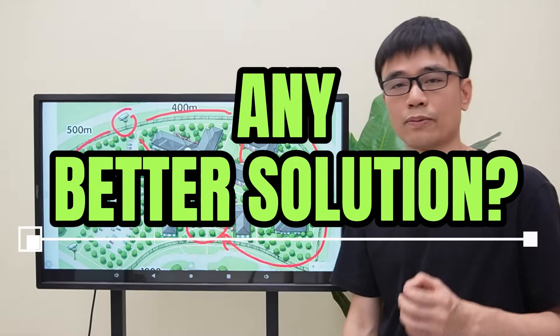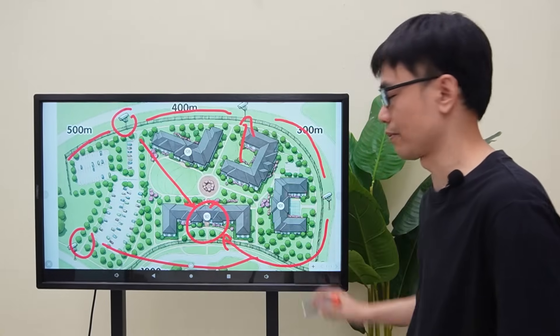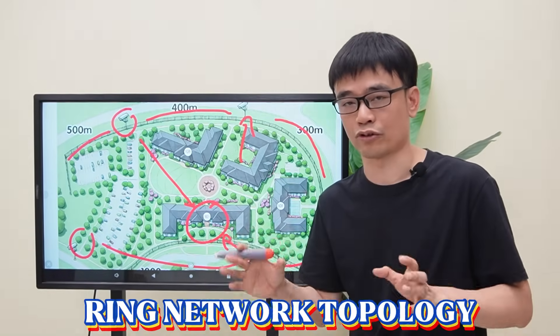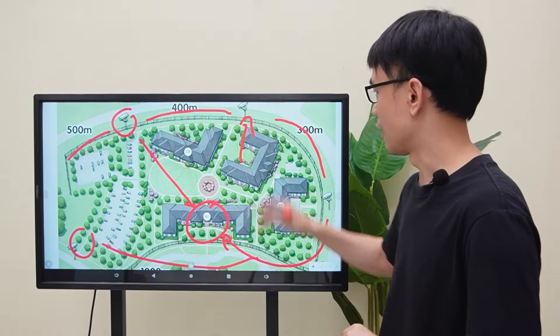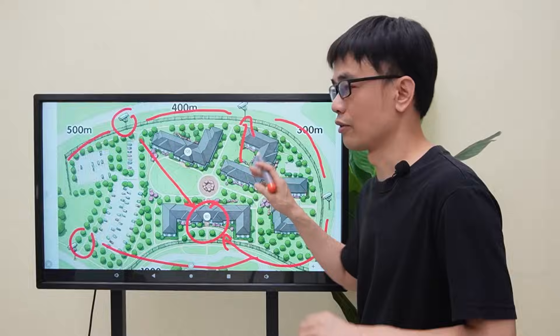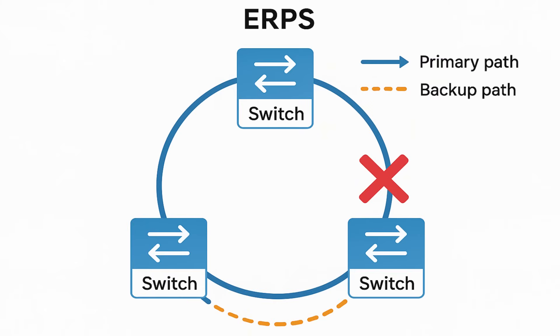A better solution is connecting the last PoE switch back to the first PoE switch to form a ring network topology. If this switch fails, the rest of the switches will take different paths to send the signal back to the control room.